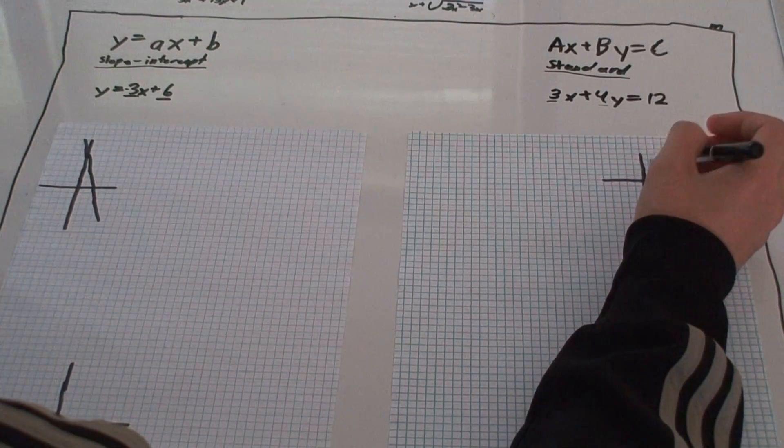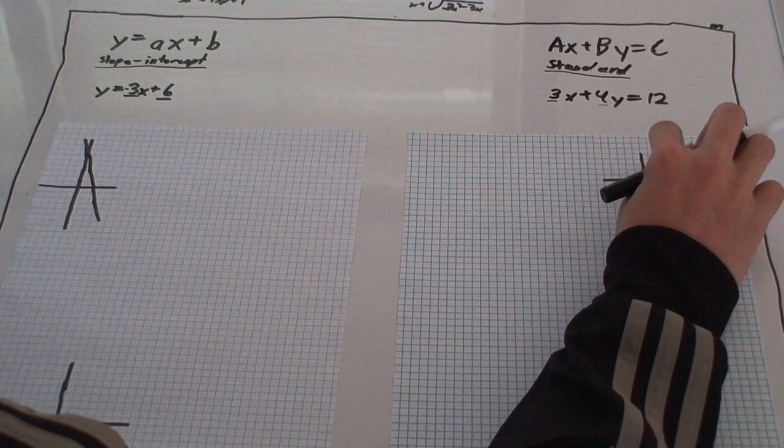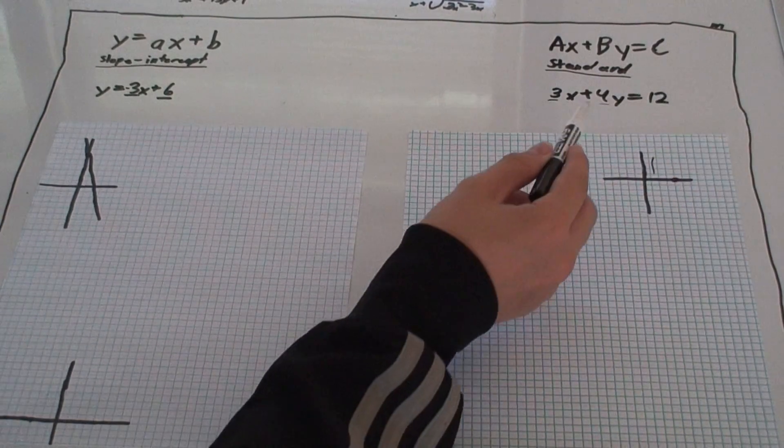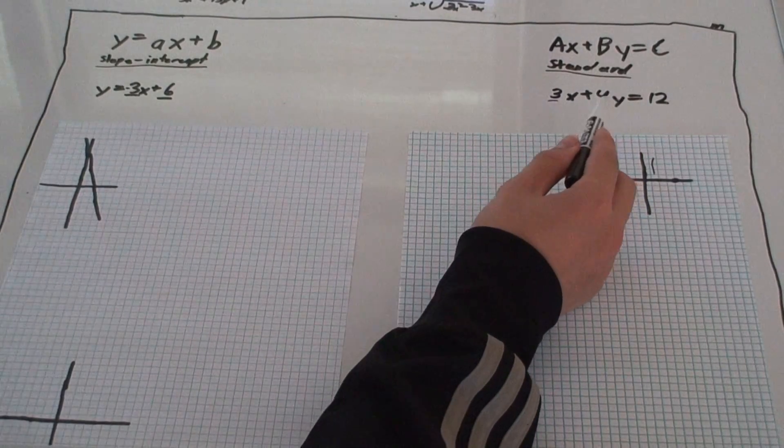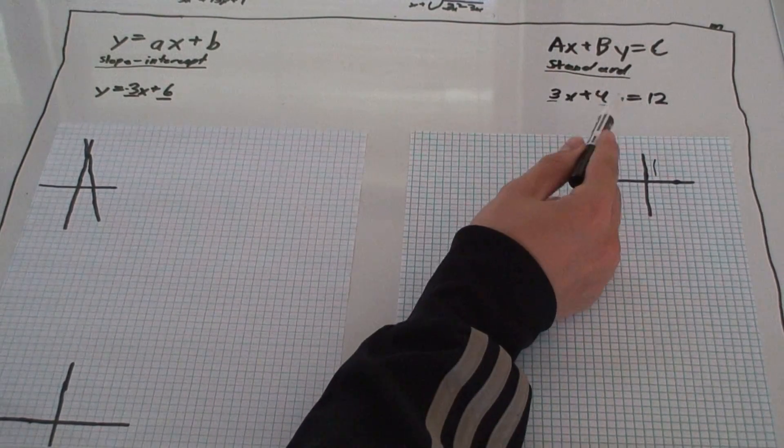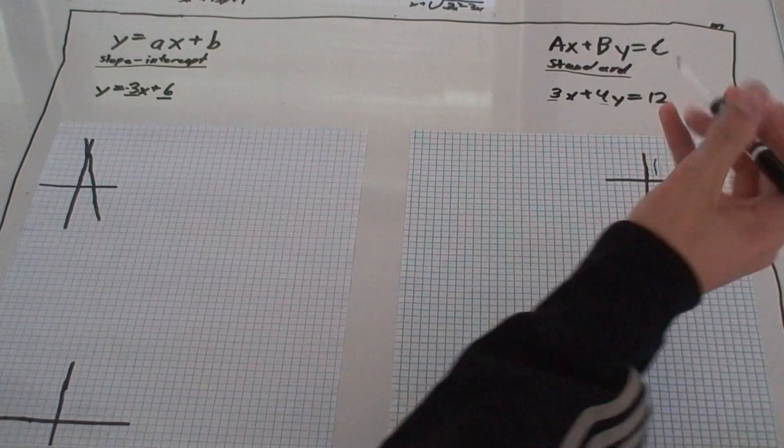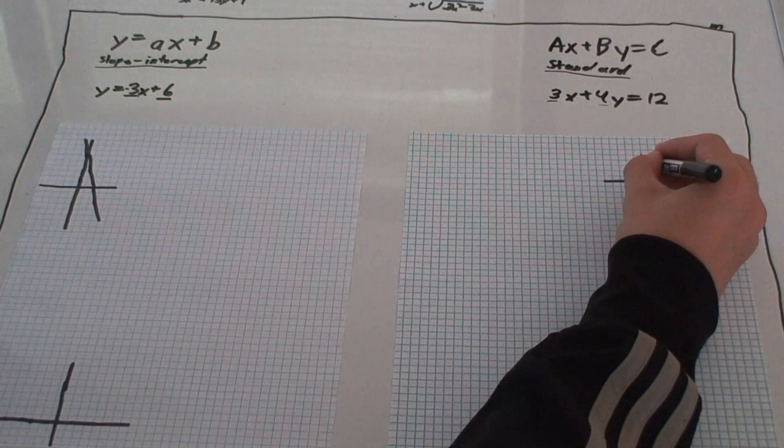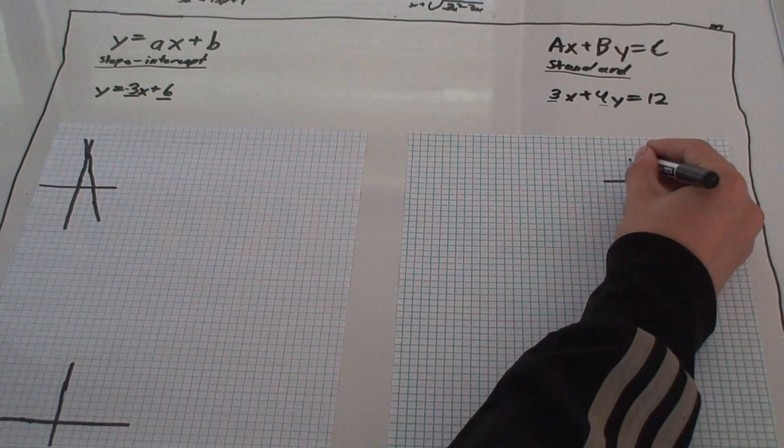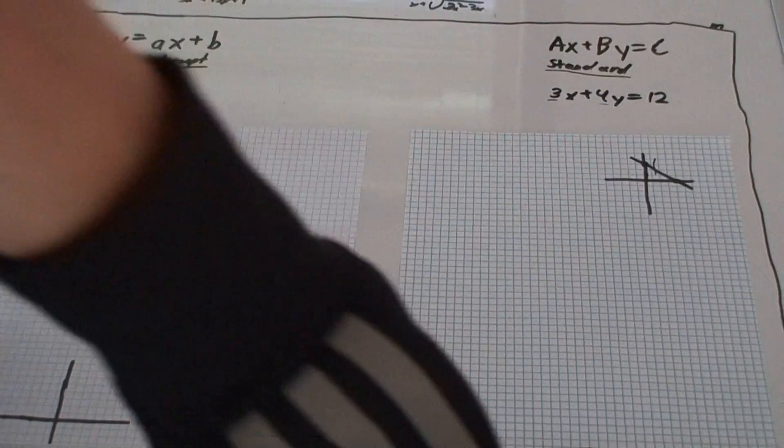Then, if you want to find the y-intercept, then you would just make the x value 0. You have 4 times y, what do you need? You get 12, you need 3. That is another way to find the slope of your graph.